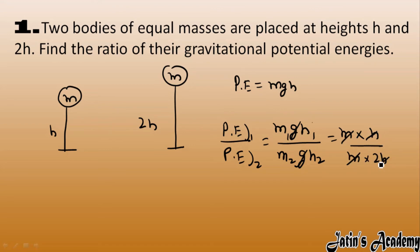So we get 1 by 2. The potential energy of first case over potential energy of second case is 1 by 2, which is 1 ratio 2.